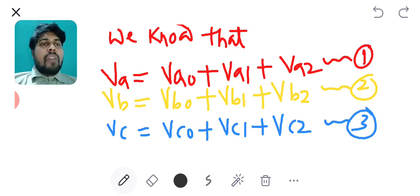And VC is the sum of 0 sequence voltage of phase C, positive sequence voltage of phase C and the negative sequence voltage of phase C.